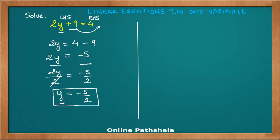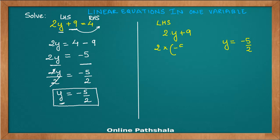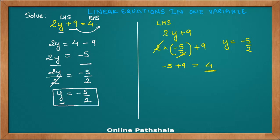Take the left hand side of the equation which is 2 into y plus 9, and we are substituting y equals minus 5 by 2. So 2 multiplied by minus 5 by 2 plus 9 — this 2 gets cancelled and we have minus 5 plus 9, which is 9 minus 5 and we get 4. When we substitute y equals minus 5 by 2 we get 4, which is the right hand side as well. Therefore this is a solution of the equation.